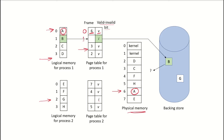Similarly, page 1 is currently not in the valid state — its valid-invalid bit is I. Logical page 2 is currently in frame 3 of the memory, and you can see that logical page 2 with content C is available in physical memory. For process 2, logical page 3 is available in frame 5 of the physical memory.